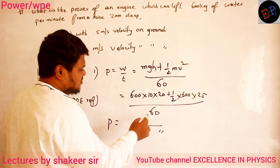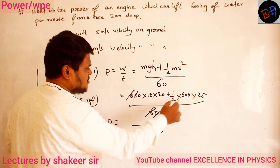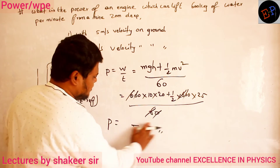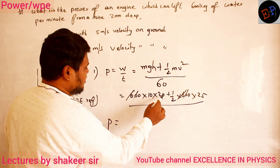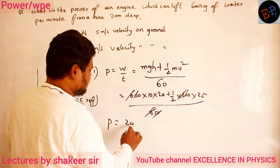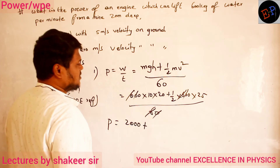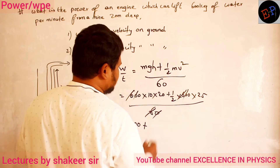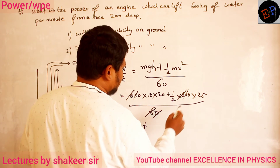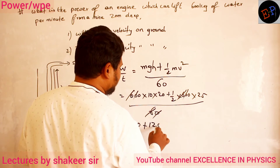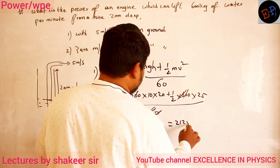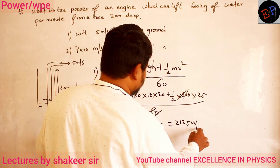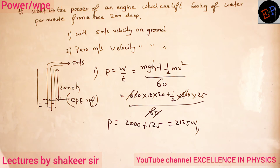Substituting values: m = 600, g = 10, h = 20, v = 5, t = 60. MGH = 600 × 10 × 20 = 120,000 J. ½Mv² = ½ × 600 × 25 = 7,500 J. Dividing by 60 gives: 2,000 + 125 = 2,125 watts. So the power of the engine in the first condition is 2,125 watts.